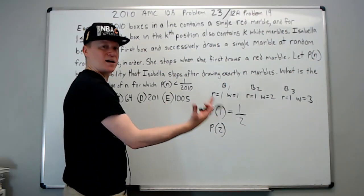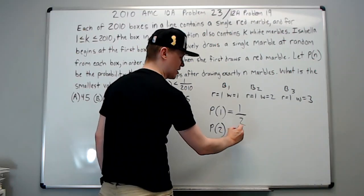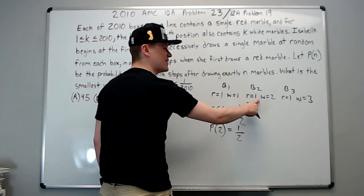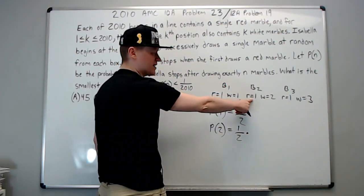That means box one white, box two red. White has the same probability as red in box one, one in two. And since these are independent events we multiply them. The chance of getting red on the second box is one out of the total marbles, which is three.